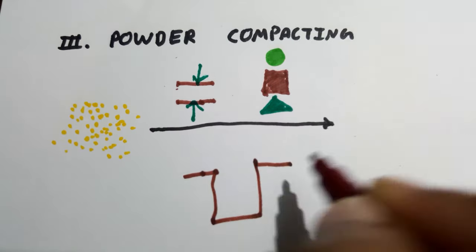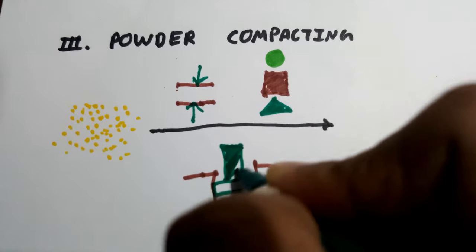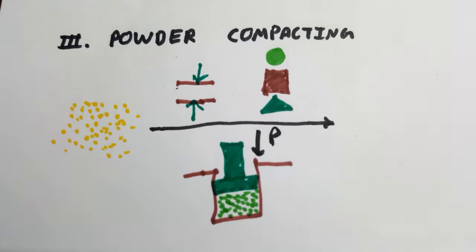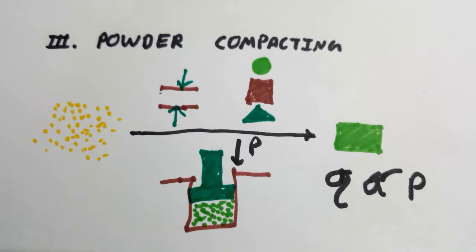After sufficient time and pressure application, the upper punch is lifted and the compact powder mix called green compact is ejected out with the help of the bottom punch. The density of this compact depends on pressure applied.